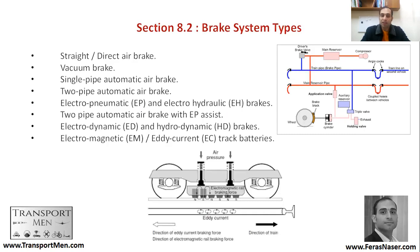Some of the brake system types: I'll be talking about air brake systems and electromagnetic brake systems. There is the straight direct air brake, where you have a driver brake valve associated with a reservoir. When the valve is released, it's connected to the brake cylinder, which is directly connected to the brake block. There are other types: single pipe automatic air brake, two pipe automatic air brake, electro-pneumatic and electro-hydraulic brakes, and electrodynamic and hydrodynamic brakes. There is also the electromagnetic brake, used in emergency scenarios where the application can be very strong and very rough. You should remember the air brake and the electromagnetic brake.